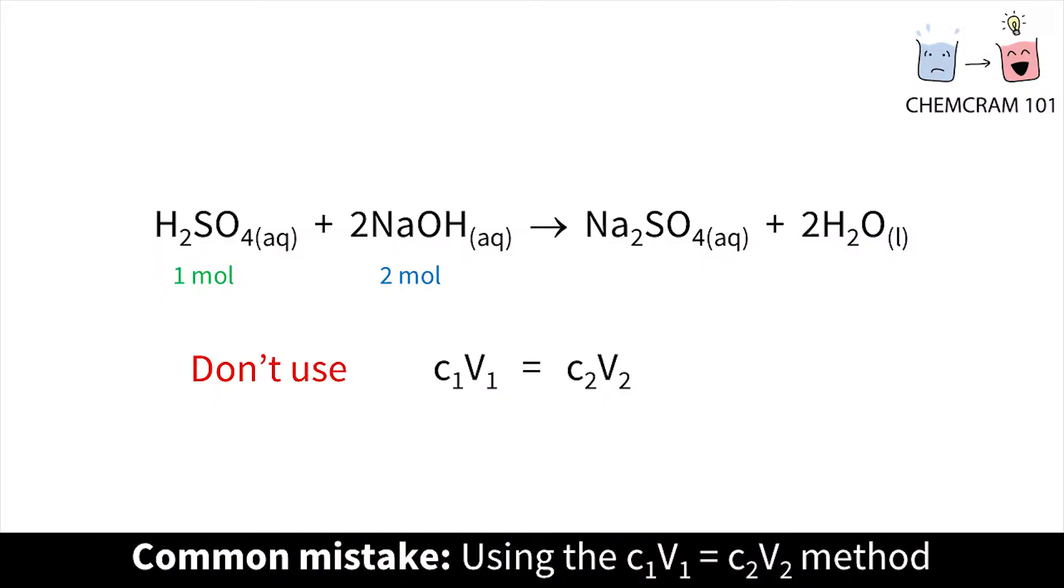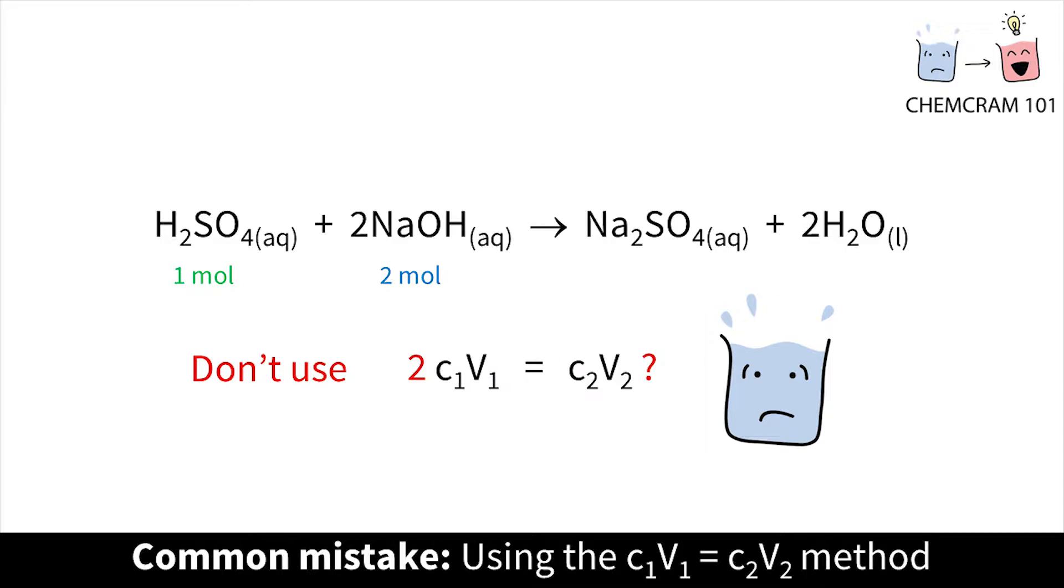These are the questions where the common cheat method of using C1V1 equals C2V2 fails pretty hard because it's really difficult to work out how to incorporate the mole ratio into the calculation correctly. Instead we're going to go through the same steps as last time which work for any mole calculation.